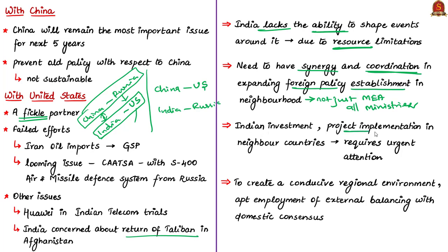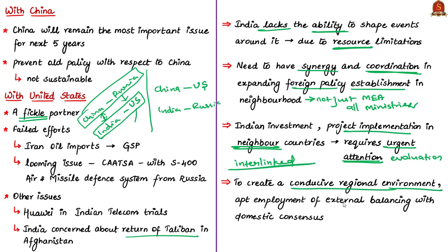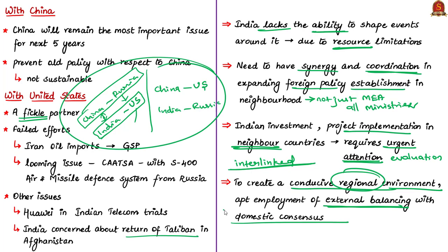The author suggests that India lags in project implementation, so there has to be urgent attention and evaluation of Indian investments and project implementation in neighboring countries. All these relationships and developments are interlinked and add to complexity in foreign policy. To create a conducive regional environment, apt utilization of external balancing along with new domestic consensus is required. By domestic consensus, the author implies there must be alignment of opinions — among people, top leadership, bureaucracy, industries, and ministries — on how to engage with countries in the neighborhood.